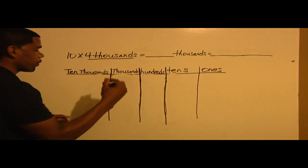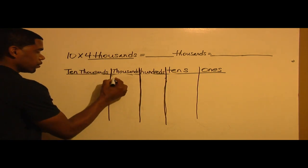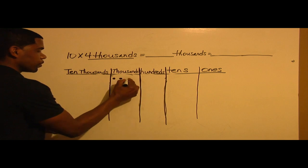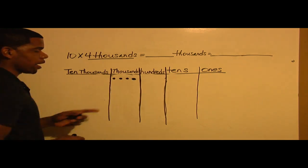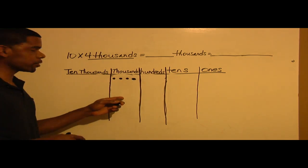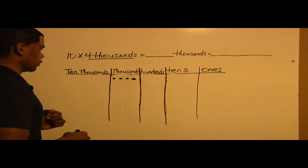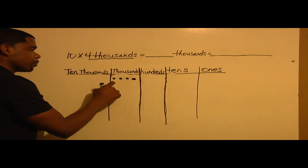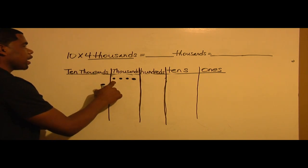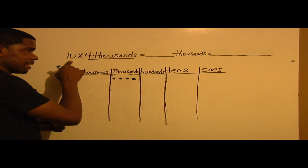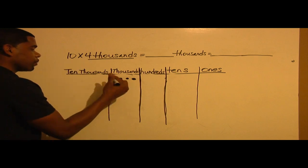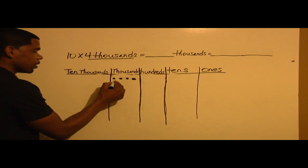I'm going to add 4 of those — 1, 2, 3, 4 — so I have 4 groups of 1,000. Within each group, I need to have 10. So within this group, I'm going to add 10.